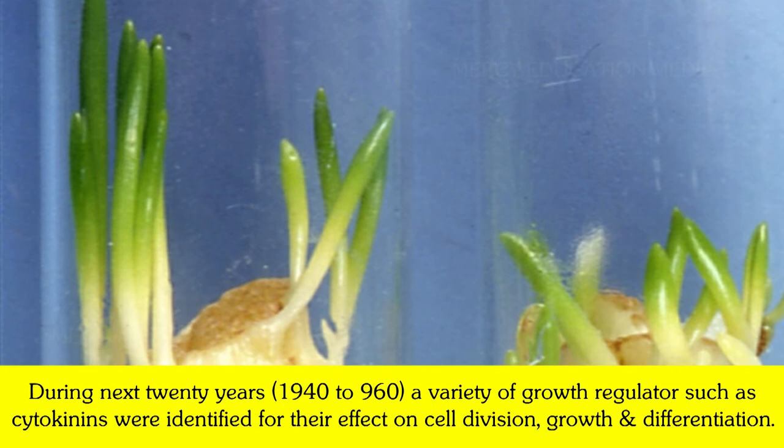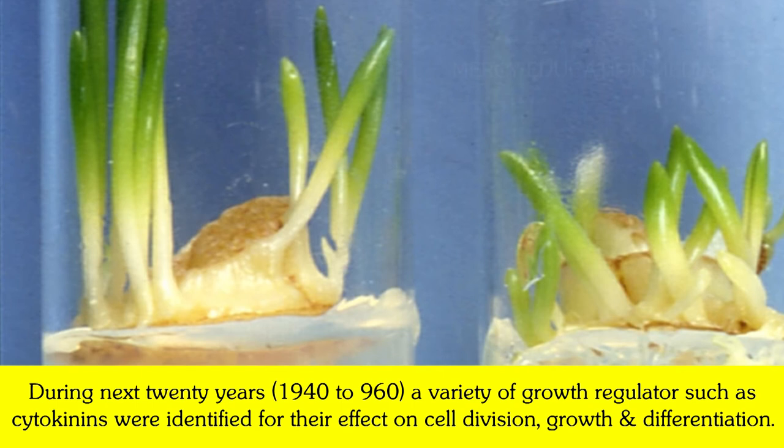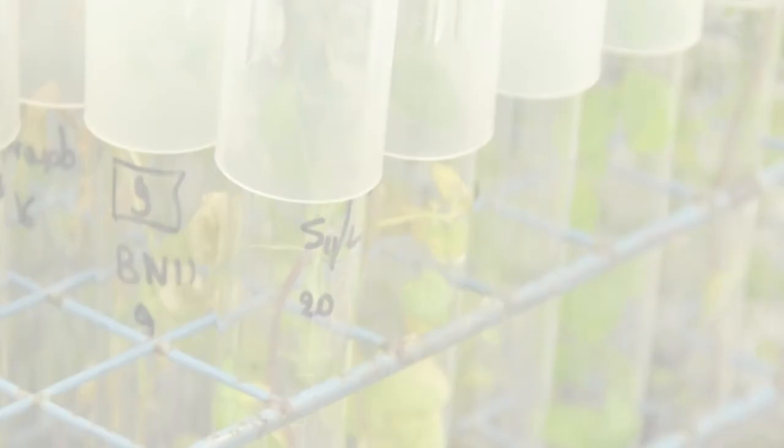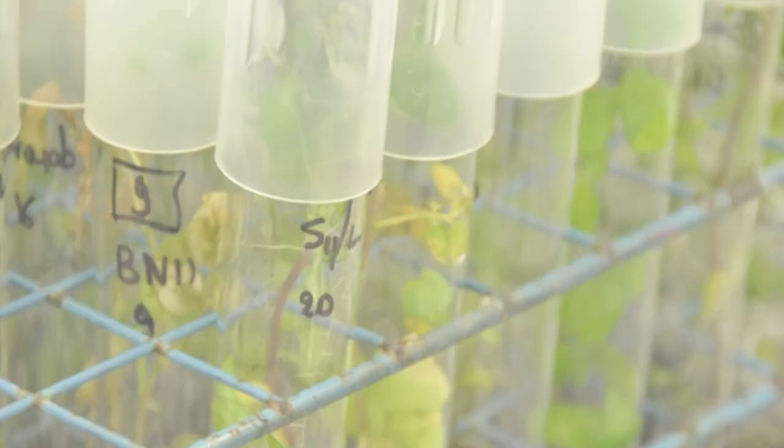During the next 20 years, i.e. from 1940 to 1960, a variety of growth regulators such as cytokinins were identified for their effect on cell division, growth and differentiation.